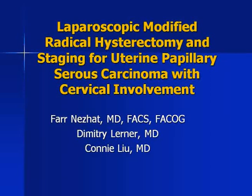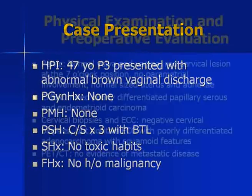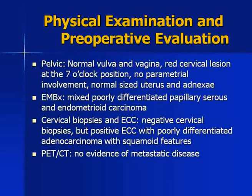Laparoscopic Modified Radical Hysterectomy and Staging for Uterine Papillary Serous Carcinoma with Cervical Involvement. The patient is a 47-year-old para-3 who presented with complaints of a brown vaginal discharge. Her history was notable only for three prior cesarean sections and no family history of cancer. Her pelvic exam was significant for a red lesion at the 7 o'clock position on the cervix. Bimanual exam revealed no parametrial abnormalities, a normal-sized uterus, and bilateral adnexa. Endometrial biopsy was positive for a mixed endometrioid and papillary serous carcinoma.